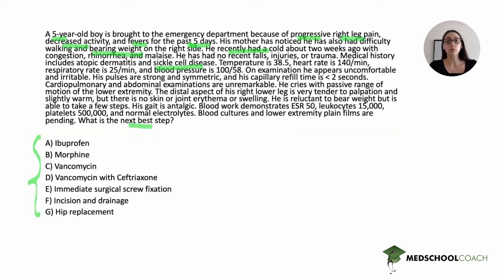We always want to highlight abnormal vital signs. Temperature is 38.5, heart rate is 140, respiratory rate is 25, and blood pressure is 100 over 58. So the patient is febrile and tachycardic, but is not tachypneic or hypotensive.